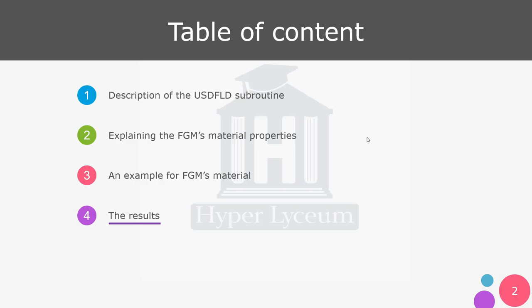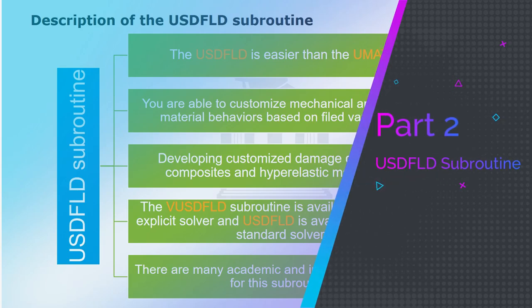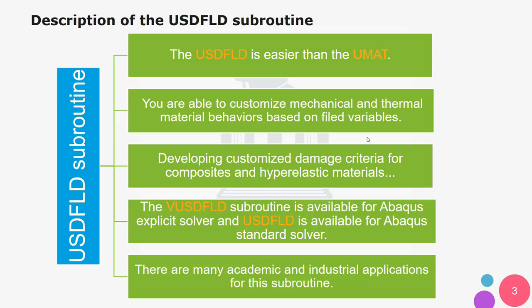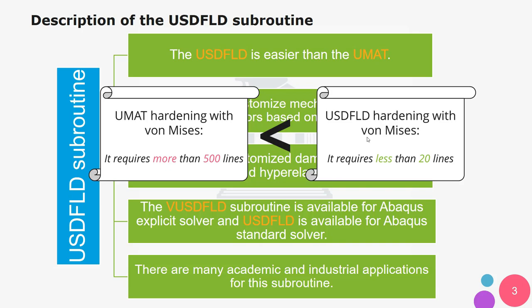Lastly I will analyze the results generated by the modeling. The USDFLD subroutine is very well known and easier than the UMAT subroutine, so engineers often prefer it. For instance, to develop the hardening behavior of the material based on the von Mises criteria, the UMAT subroutine requires more than 500 lines of code, whereas you can yield the same results with less than 20 lines using USDFLD.